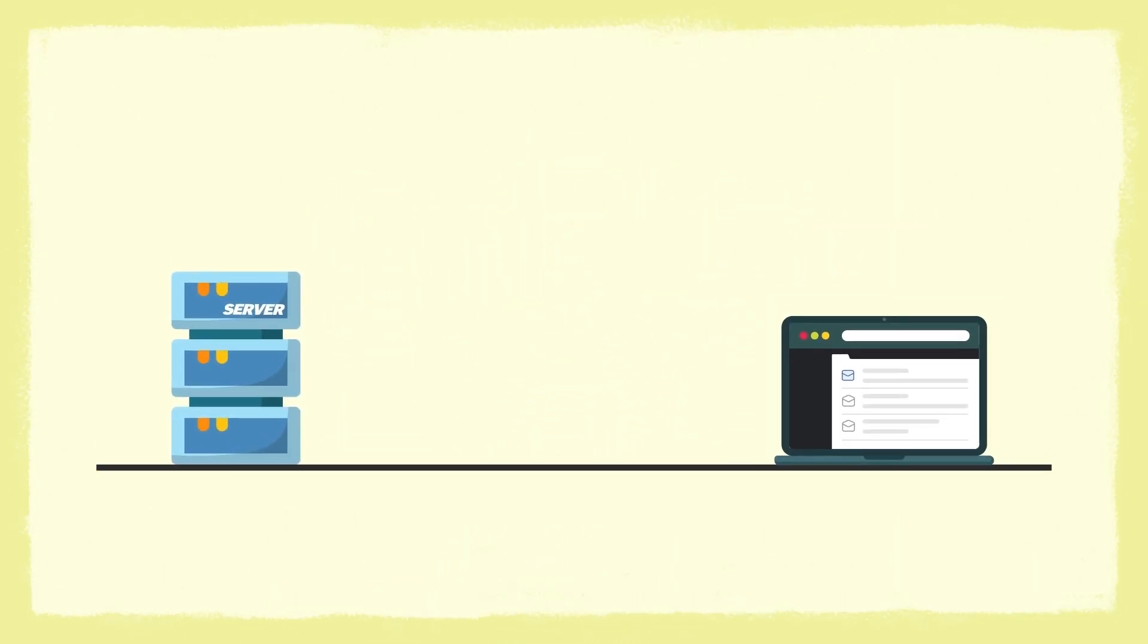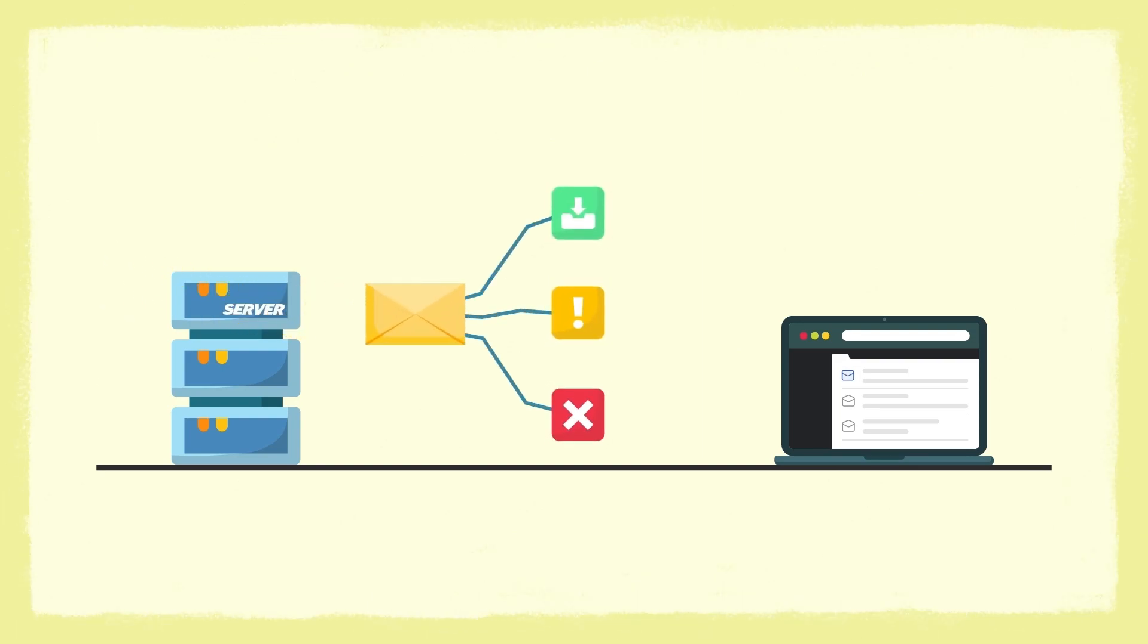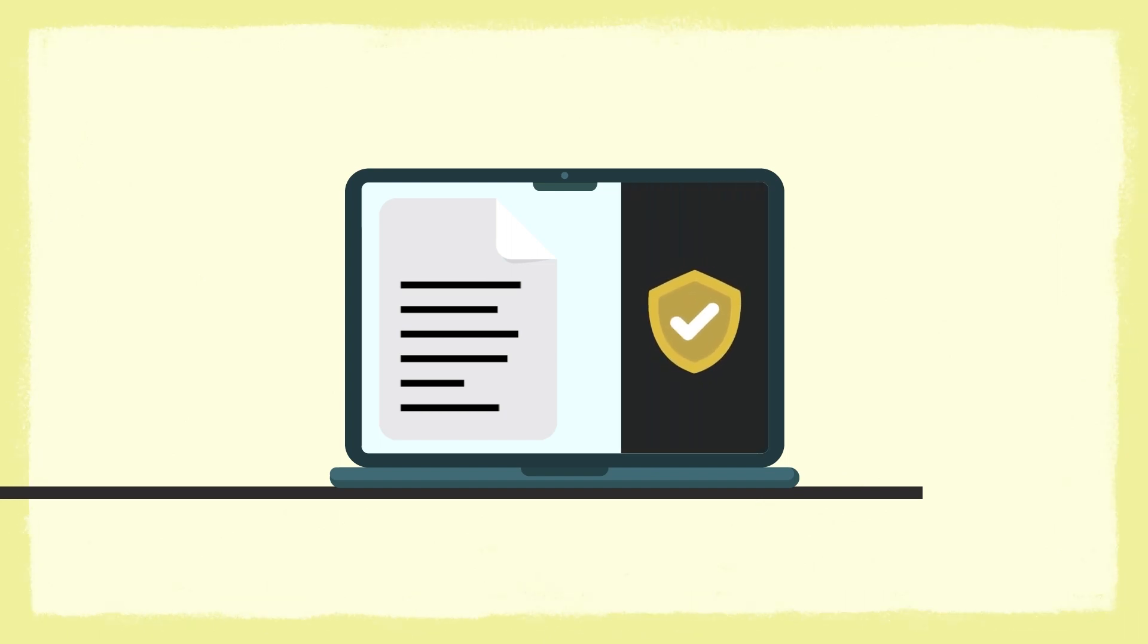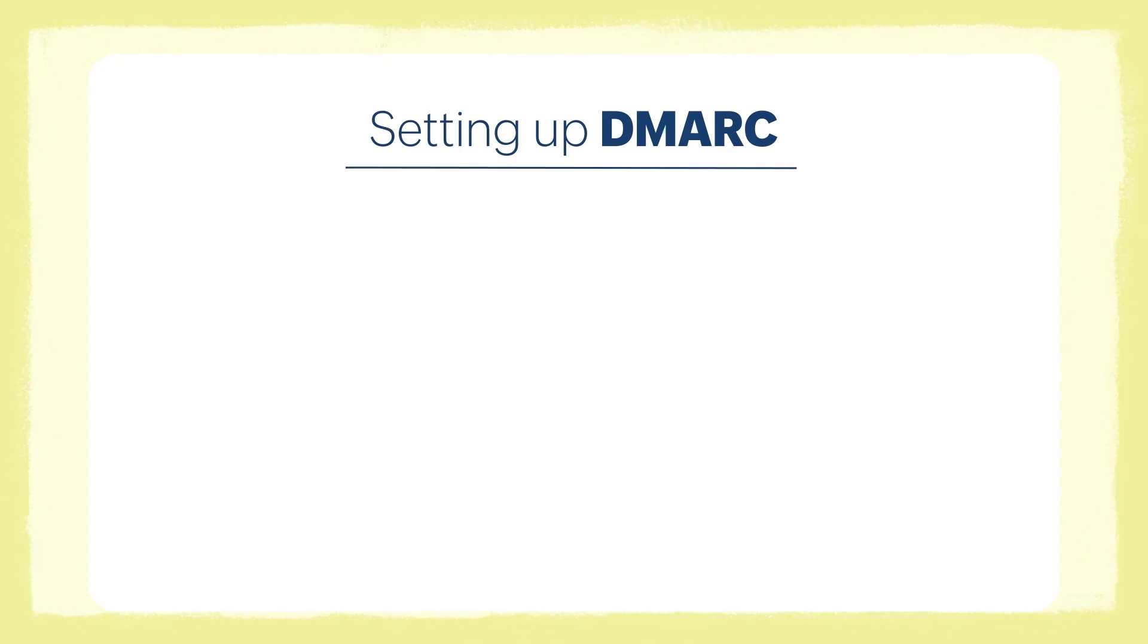The objective is two-fold: send instruction to the receiver on how to handle emails from authenticated sources, and send reports that help senders and receivers improve and monitor their authentication infrastructure. To set up DMARC in Zoho Mail,